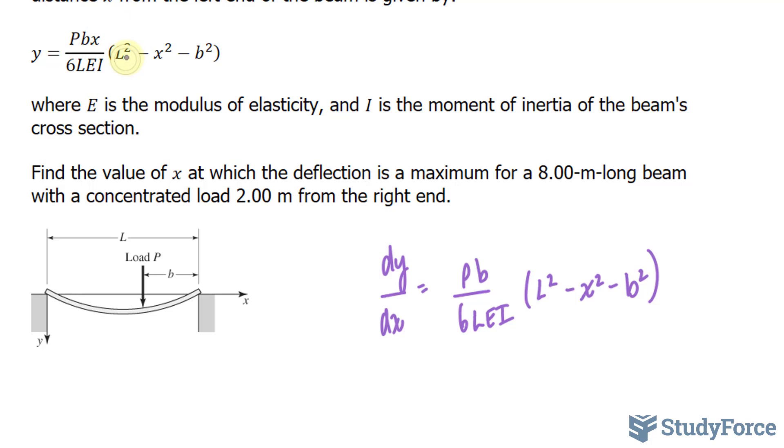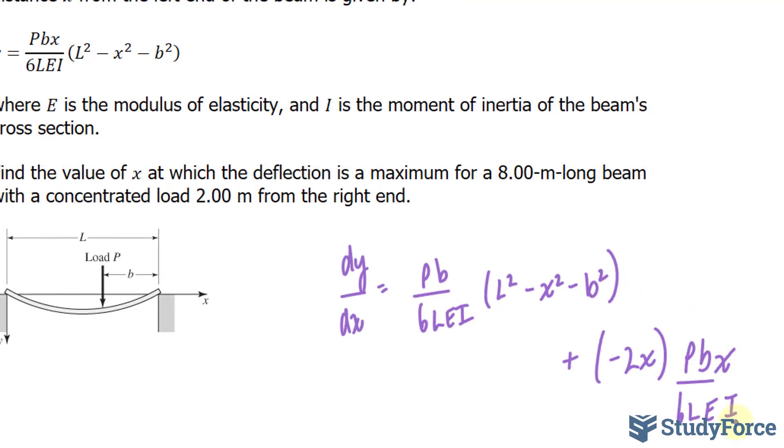Now we're going to take the derivative of this expression and multiply it to this expression. The derivative of L to the power of 2, remember that's a constant, that's zero. The derivative of negative x to the power of 2 is negative 2x. And the derivative of negative b squared is zero as well. So we have plus negative 2x. And we're going to leave this part the way it is.